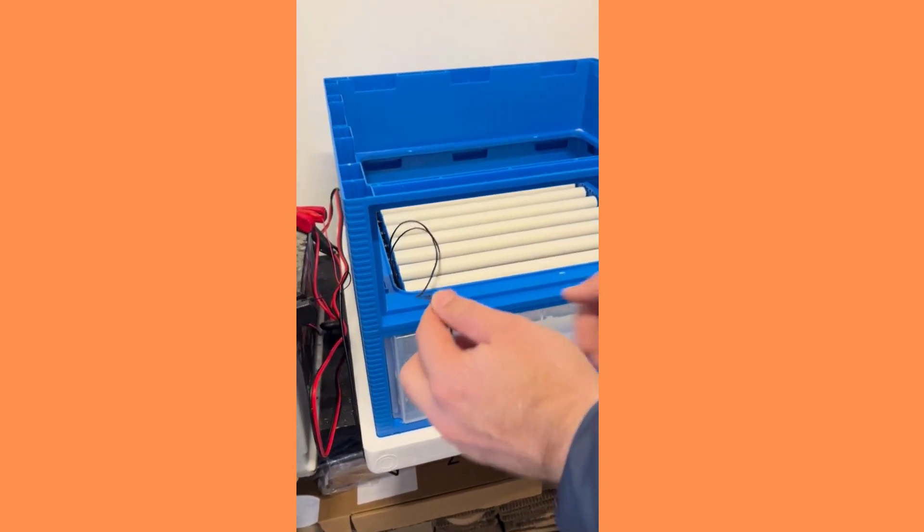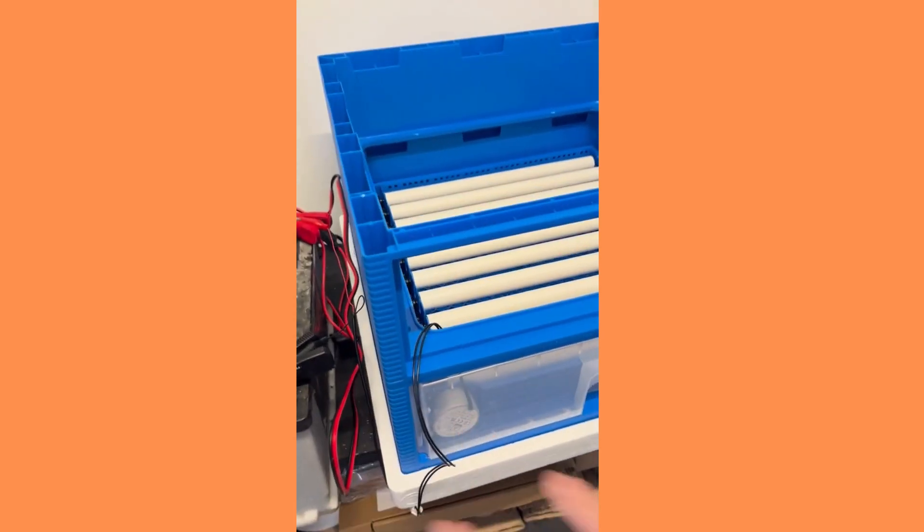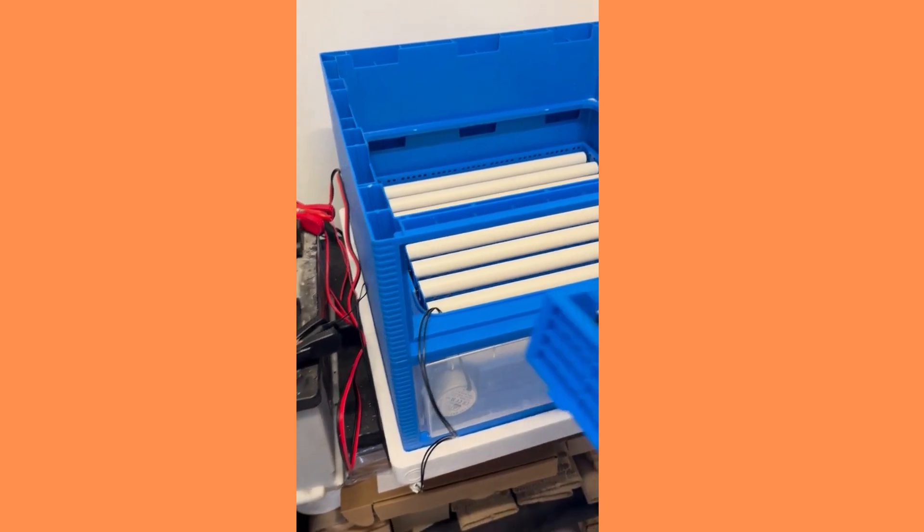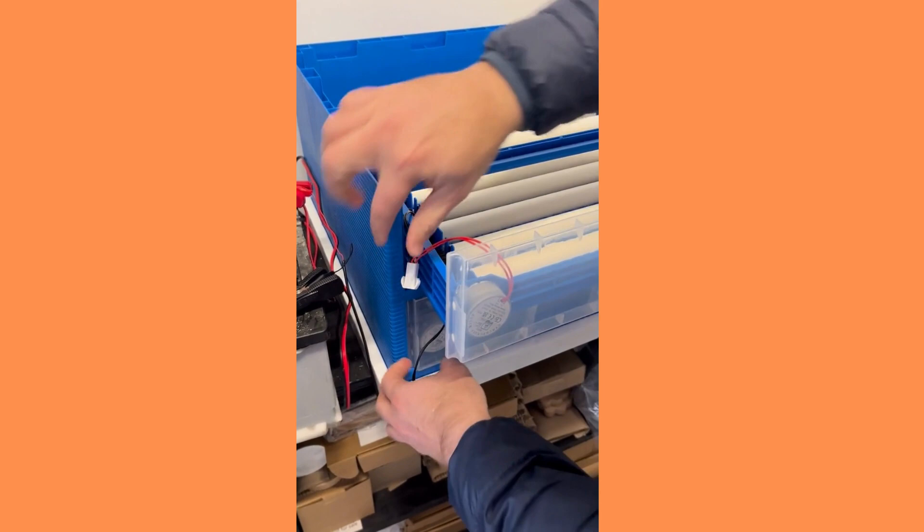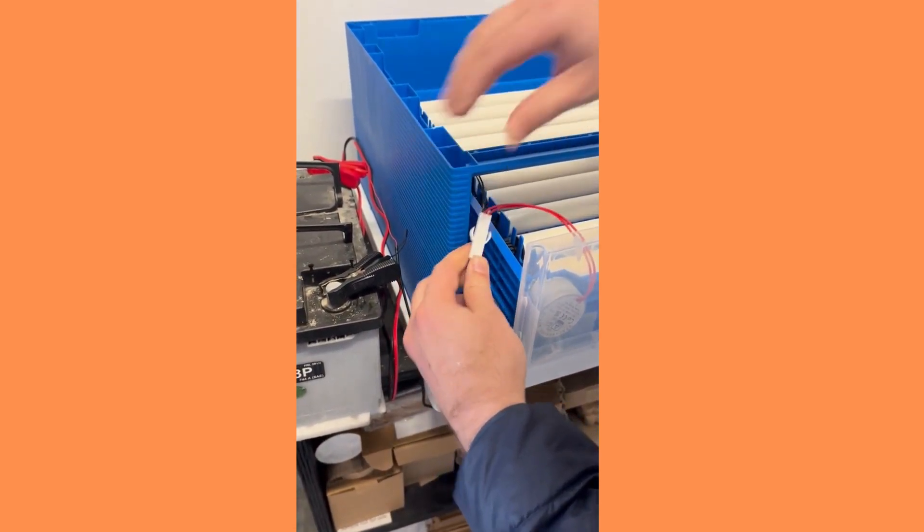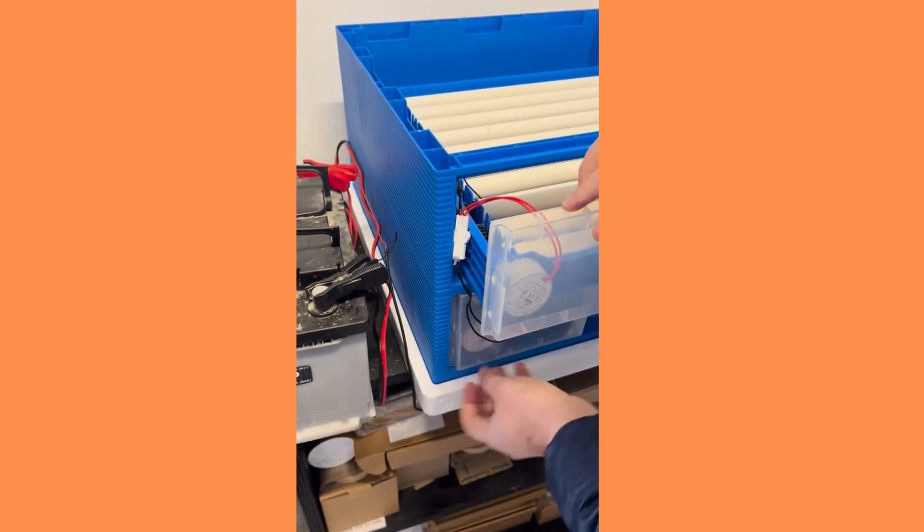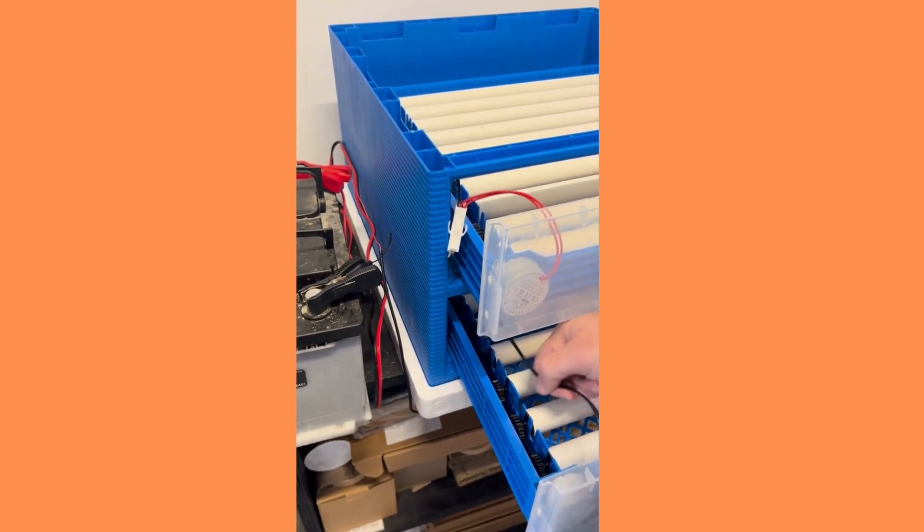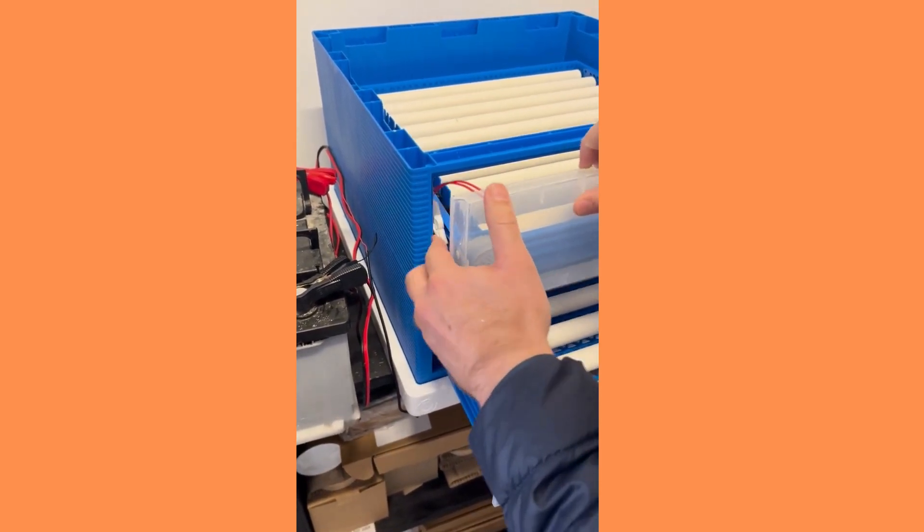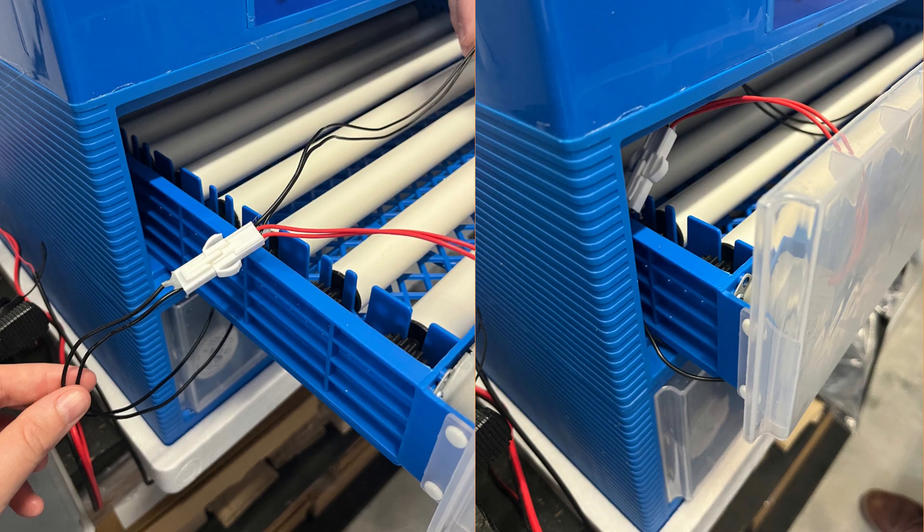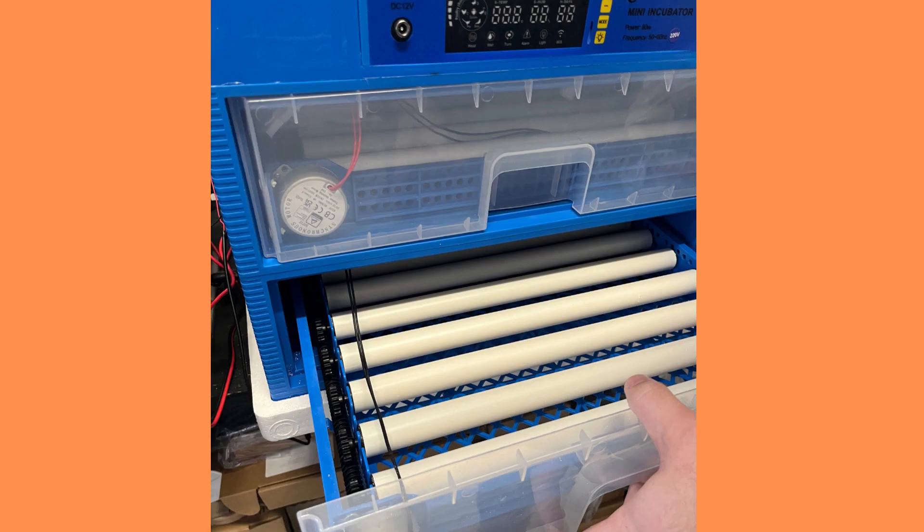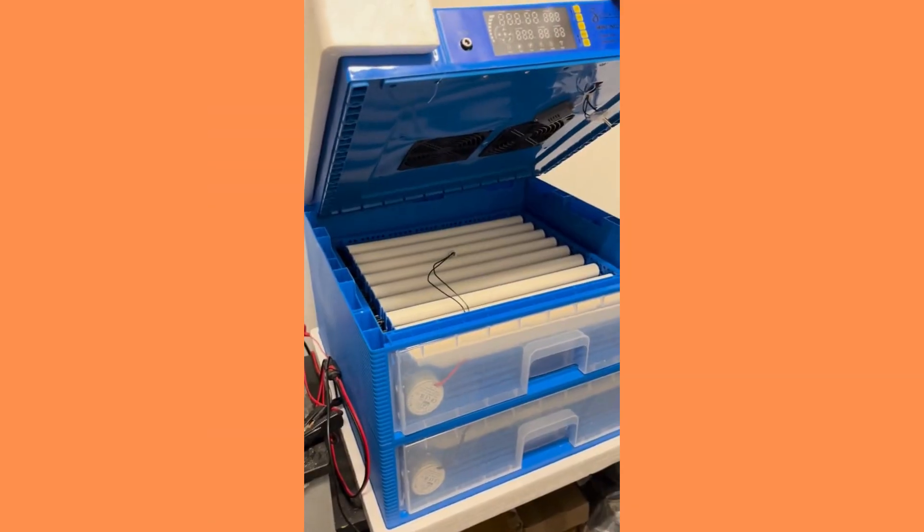Once the first level is done, we're going to connect the second level. We pull through the turning motor wire there. Once it's pulled through, we add the second drawer and make the connection there. We can just open that drawer to pull it a little straight. Pull it through and then we've got the two drawers.